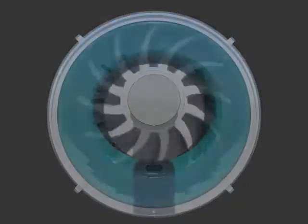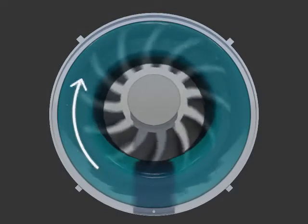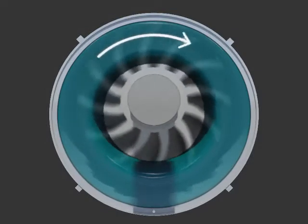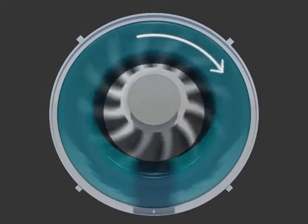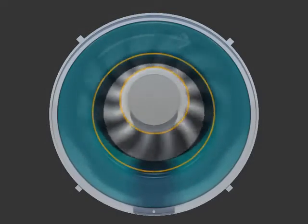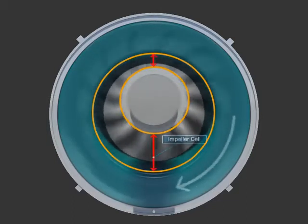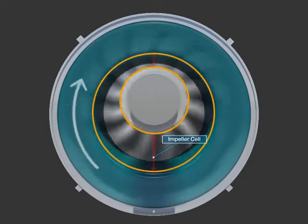The impeller spins at the speed of 495 RPM and the seal water becomes the form of a liquid ring because of the centrifugal force.